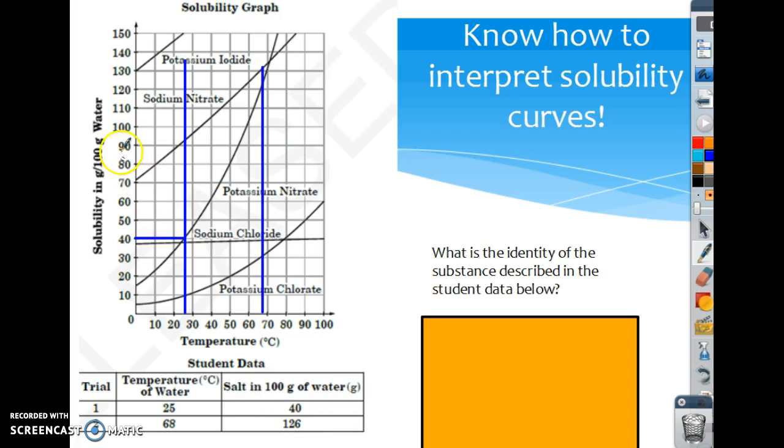And then at 126, it would meet right about here. So the compound that they're talking about has to be potassium nitrate, because it is the only one that meets that line at both of those times.